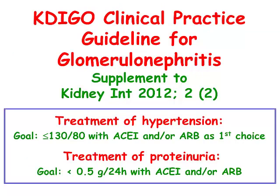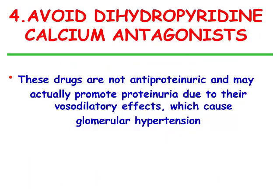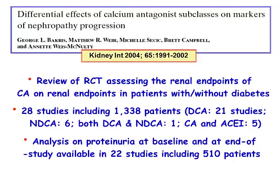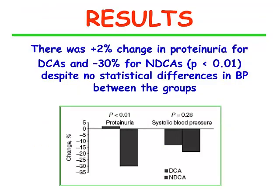KDIGO clinical practice guidelines for glomerulonephritis recommend treatment of hypertension with ACE inhibitors and/or ARB as first choice, with the goal of achieving less than 500 mg proteinuria per 24 hours. Another recommendation is to avoid dihydropyridine calcium antagonists such as amlodipine and nifedipine, because they are not anti-proteinuric and may promote proteinuria due to their vasodilatory effects causing glomerular hypertension. On the contrary, non-dihydropyridine drugs such as diltiazem and verapamil can significantly reduce proteinuria independently of their effect on systolic blood pressure.